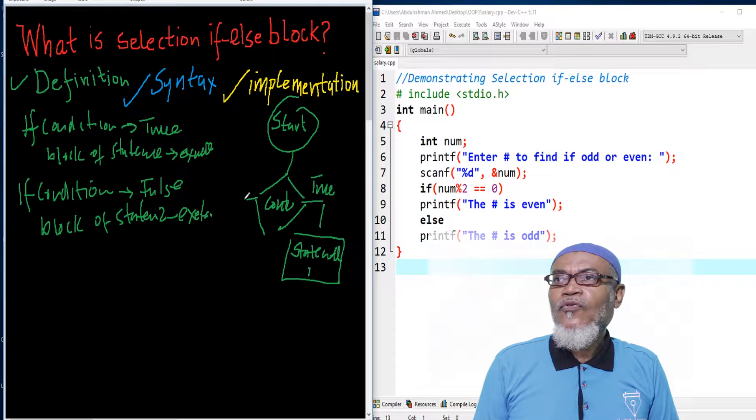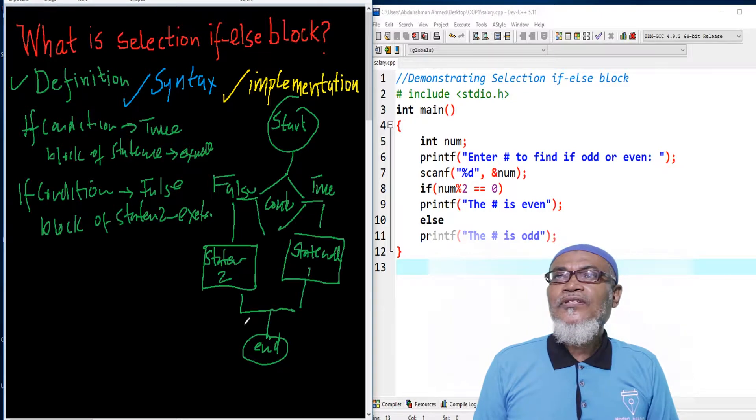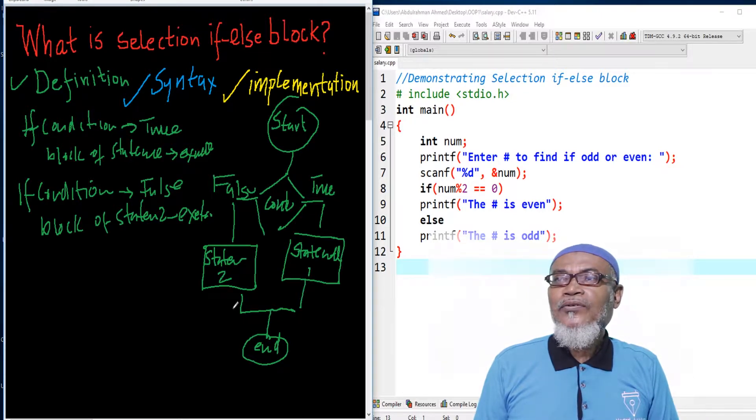If it is false, we have another block of statements which is executed, and then after that, the program ends. So this is basically what an if-else block statement is.